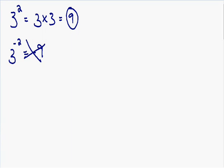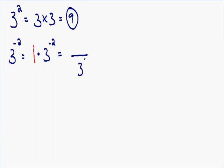So how do we solve negative exponents? The first thing I'm going to do is multiply by 1. Multiplying by 1 does not change a thing — 3 with a negative 2 exponent is exactly the same as 1 times 3 with a negative 2 exponent. What I like to do is make the negative exponent positive. A negative exponent in the numerator is a positive exponent in the denominator. So this 3 with a negative 2 exponent, which is in the numerator right now, can be rewritten as a 3 with a positive exponent in the denominator.